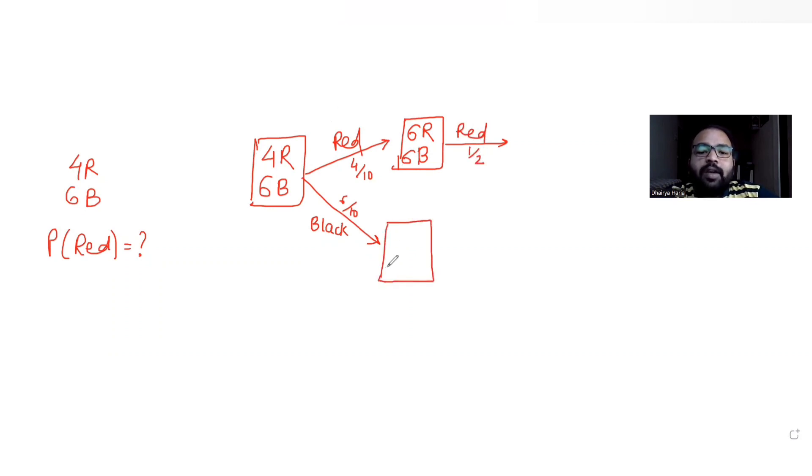The second case: if the ball I had picked in the first case was black and if I replace this again with two additional black balls, so previously I had four red so now also I have four red, but for black I am placing it again with two additional black balls, so eight black balls.